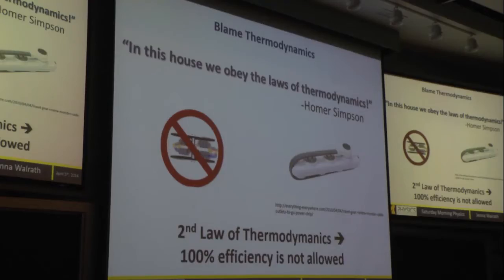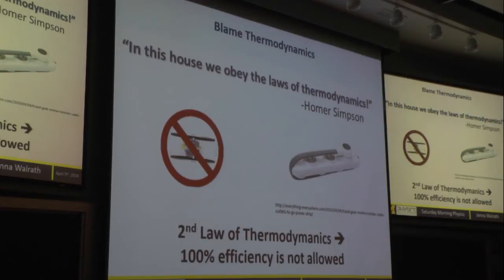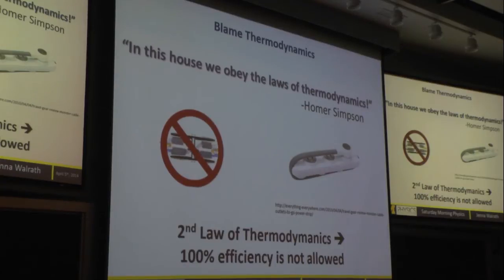Most of the blame actually goes to thermodynamics. The second law of thermodynamics is so important — even Homer Simpson enforces this rule in his own home. The same reason you can't have a perpetual motion machine, same reason plugging the power strip in doesn't give you infinite power, is the second law of thermodynamics: if I want to create an engine to do useful work, it can't be 100% efficient. I can never get that $50 all the way back because the universe requires some sacrifice of that energy to entropy.